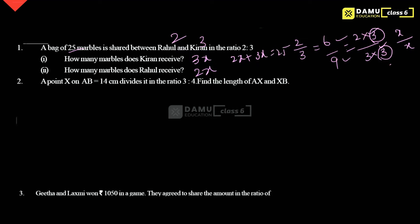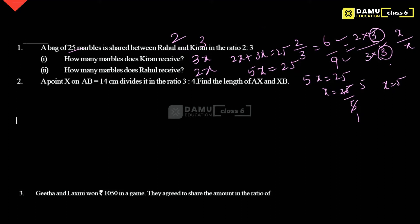2 plus 3 will be 5. So 5x will be equal to 25. Then x will be equal to 25 by 5, which gives x equal to 5.